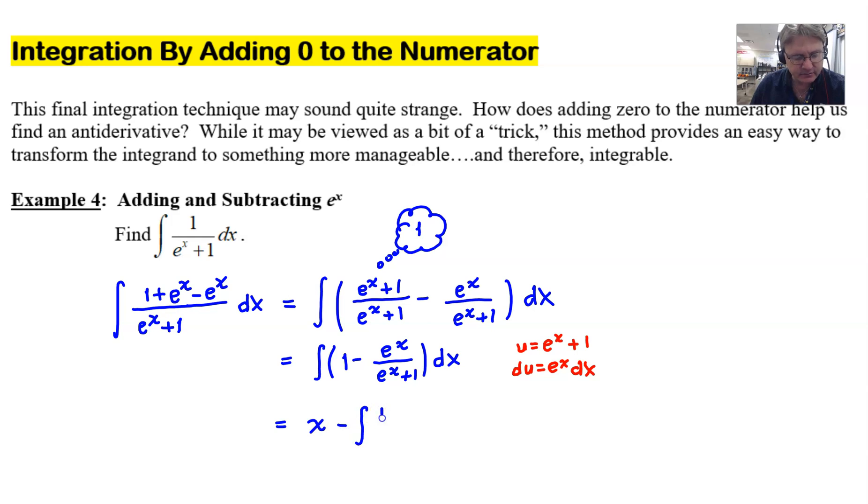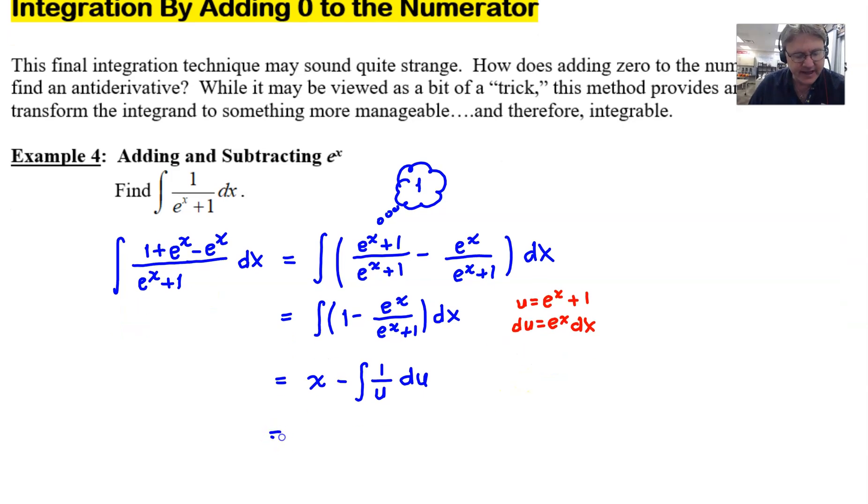So this just becomes integration of 1 over u. I'll write that again just so I don't lose anybody. But we all know that the integration of 1 over u at this point is the natural log of the absolute value of u.